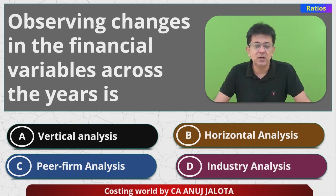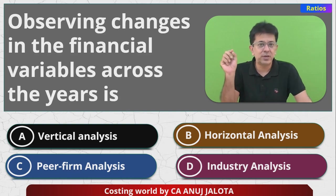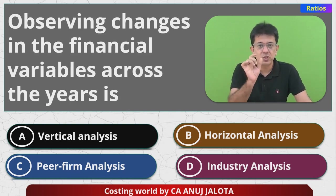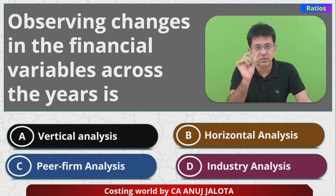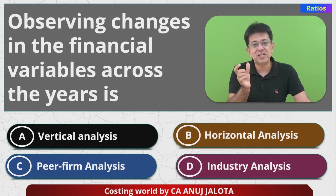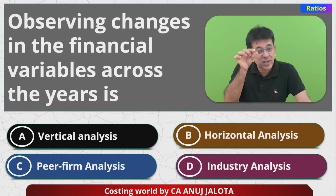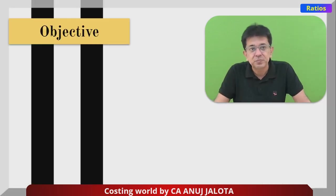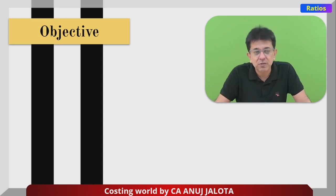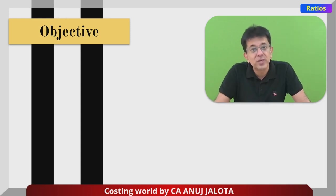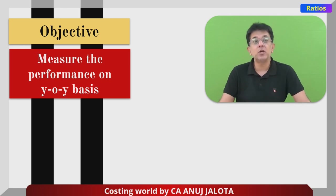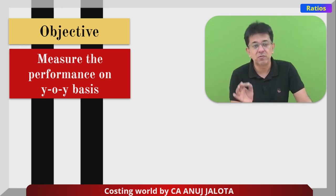What is horizontal analysis? Say company XYZ Limited — we have net sales for year one, year two, year three; COGS for year one, year two, year three; fixed assets for year one, year two, year three. This tries to tell us what the changes are. The objective of horizontal analysis is basically to measure performance on a year-on-year basis.